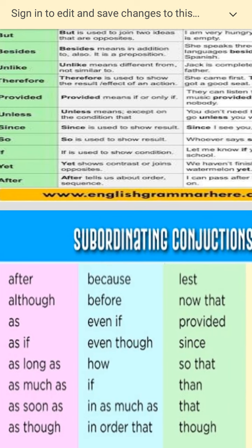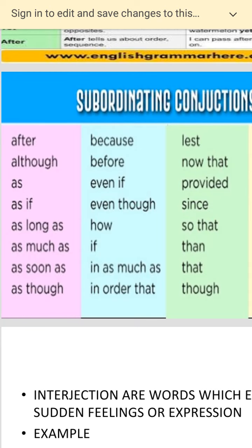And then there are some subordinating conjunctions — that is: after, although, as if, as long as, as much as, as soon as. For example: I will come as soon as possible. Here 'as soon as' extends the sentence, adding another clause to it and making it a compound sentence. So I have used 'as soon as' as a subordinating conjunction. Or: I will come because of you — 'because' is a subordinating conjunction.